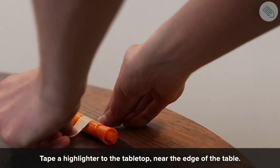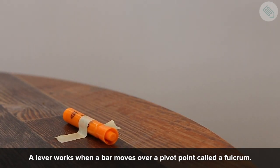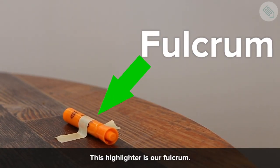Tape a highlighter to the tabletop near the edge of the table. A lever works when a bar moves over a pivot point called a fulcrum. This highlighter is our fulcrum.